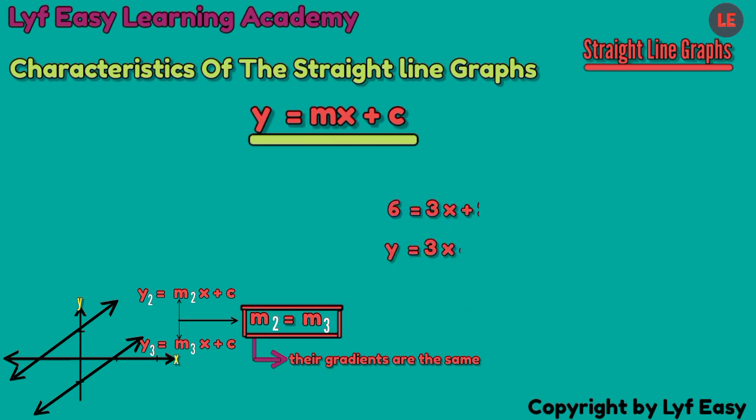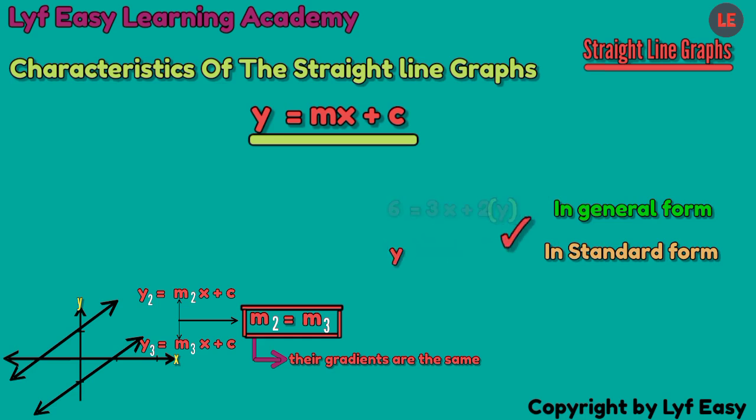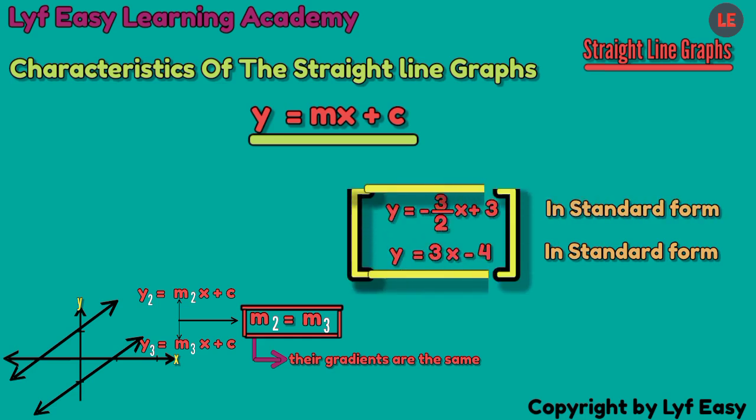But let us look at these two. We have three on both sides here, but we cannot finalize by saying gradient is the same. It is because this one is in general form which needs to be converted to standard form. This y needs to be by itself on this side of equal sign like this other one. Then when they are in the same form, that is when you can decide the gradient.